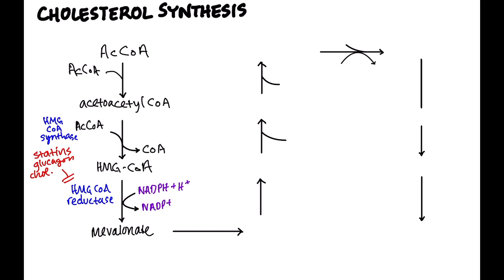There are some inductors of HMG-CoA reductase. Those are insulin, thyroxine, and estrogen. I've never seen an exam question that asks about that, but I figured I'd just mention it. So mevalonate has five carbons. And what will then happen is mevalonate will get converted into IPP. And IPP just stands for isopentanyl pyrophosphate. Don't need to know that. IPP then gets converted to DPP. These are both five-carbon molecules.